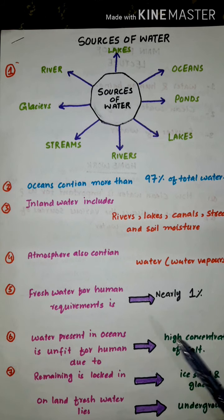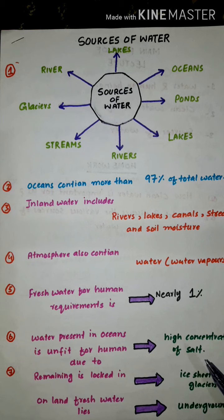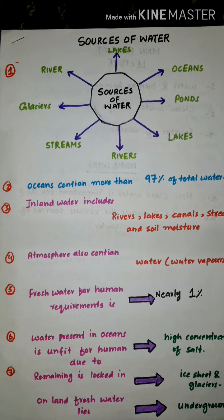Water present in the ocean is unfit for humans due to the higher concentration of dissolved salt. The remaining fresh water is locked in the form of ice sheets and glaciers on land, and fresh water also lies underground. These are the main points of the previous lecture. Now in this lecture we will discuss the impurities present in water.